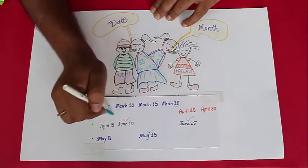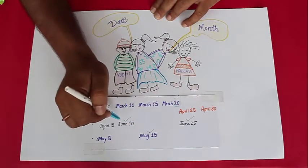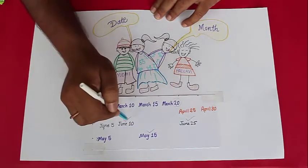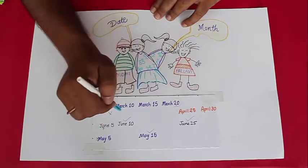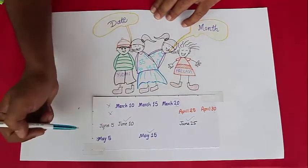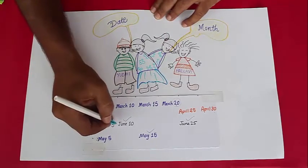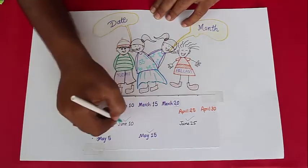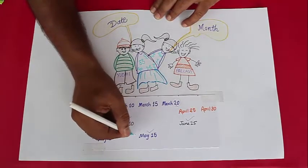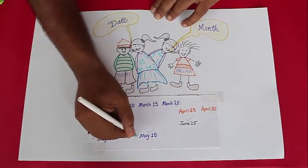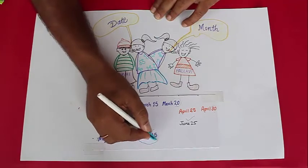Amongst these 3 remaining options, Yudhishthar could tell the answer for sure — so the date is either 10th, 15th, or 25th. But based on that, Pallavi also knew the exact answer based on just the month. It cannot be June, because June still has 2 choices remaining. So it must be the month of May, and the date is the 15th. My birthday is May 15th.